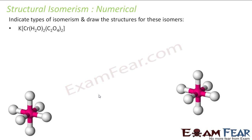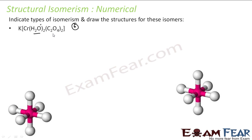We have to indicate the type of isomerism and draw the structure of K[Cr(C2O4)2(H2O)2]. The chromium is 2+, C2O4 is bidentate, so 2×2 + 2 = 6 — coordination number 6, which means octahedral. There are two water molecules and two oxalate ligands. There are two possibilities: one is trans, where both water molecules are opposite each other, and one is cis, where both water molecules are adjacent.